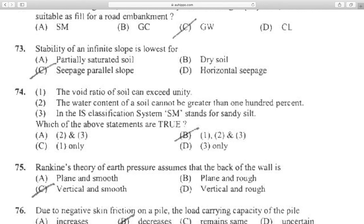Question 73: The void ratio of soil can exceed unity. The water content of a soil cannot be greater than 100%. In the IS classification system, SM stands for sandy silt. Which of the above statements are true? 1, 2, and 3 - all are correct. Question 74: Rankine's theory of earth pressure assumes that the back of the wall is vertical and smooth.